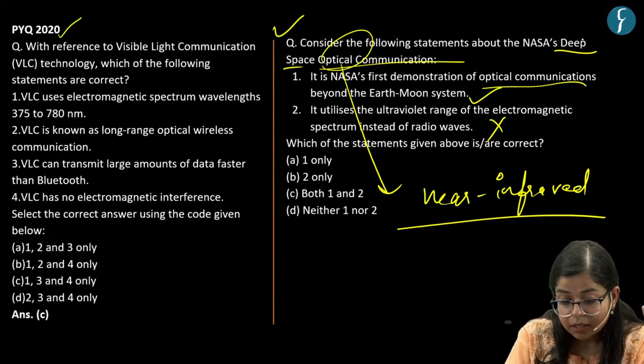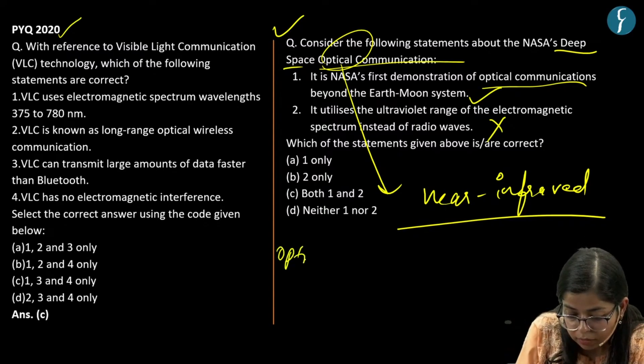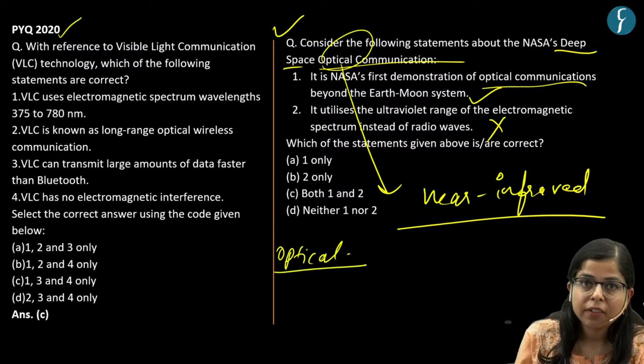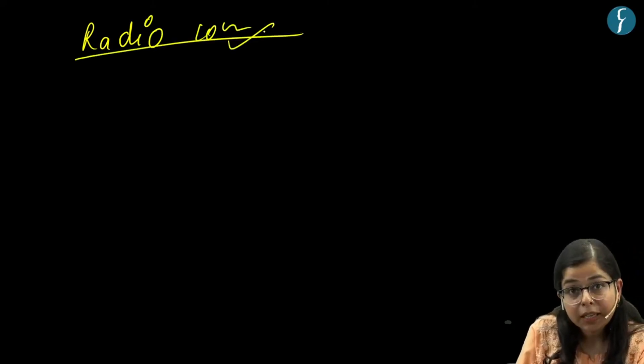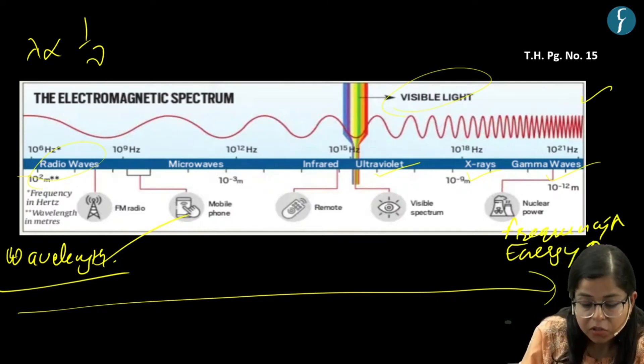This is NASA's deep space optical communication. We see a term here — optical communication. If we talk about the communication between the satellite system, generally we hear of radio communication, where this communication takes place by utilizing radio waves. What are the basics of this communication?